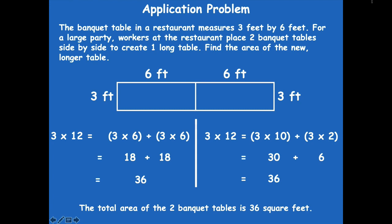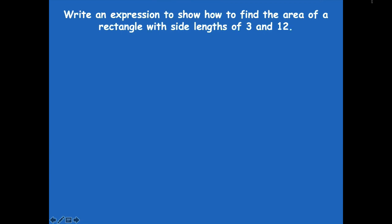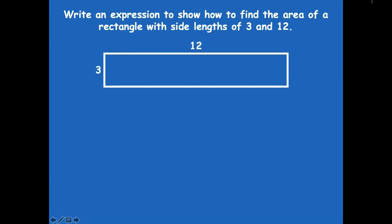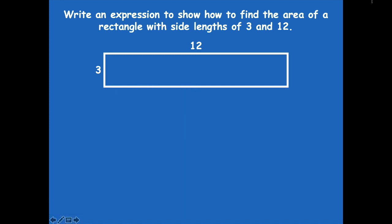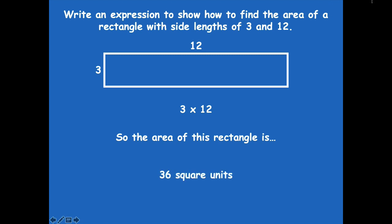So think about that — this rectangle is three feet by 12 feet. We're going to write an expression to show how to find the area of a rectangle with side lengths of three and 12, just like we did with the application problem. Pause the video, write an expression, then click play when you're ready. Here's what I came up with: three times 12. Pretty simple, right? We just did that. The area of this rectangle is 36 square units, just like we solved in the last problem.